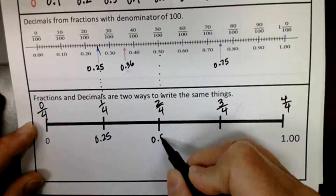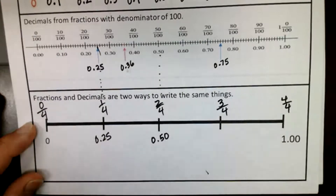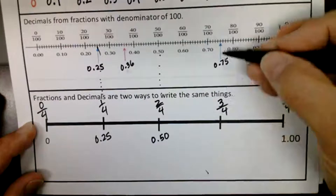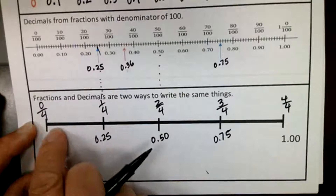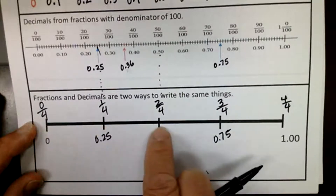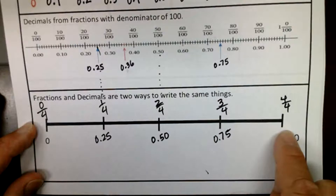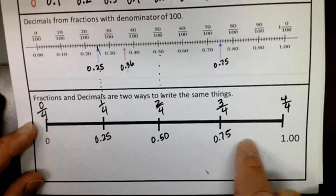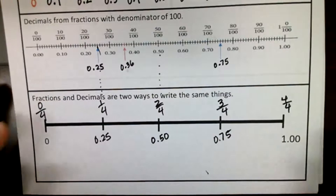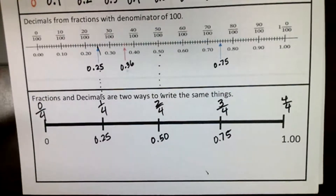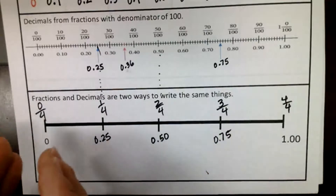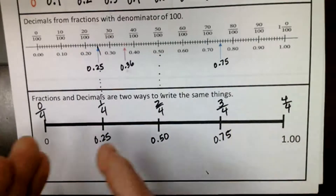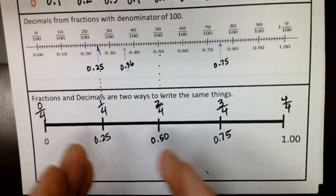So zero point five or zero point five zero. Down here, we have zero point seven five. Because if we broke this into a hundred pieces, there'd be twenty-five here, another twenty-five here, another twenty-five here, and another twenty-five here — which means twenty-five, fifty, seventy-five, a hundred. Fractions and decimals tell you the same thing, but with decimals the denominator always has to be ten, or a hundred, or a thousand. So the pieces have to be either tenths, or one-hundredths, or thousandths.